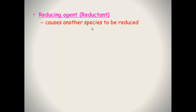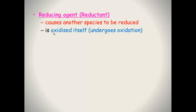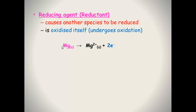So the reducing agent or the reductant is the chemical that causes another species to be reduced. It itself is oxidized, or it undergoes oxidation. For example, magnesium becomes magnesium ion and two electrons, so this is an oxidation reaction. But the magnesium will be the cause of another species to be reduced. Thus magnesium is classed as the reducing agent or the reductant.